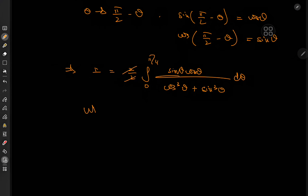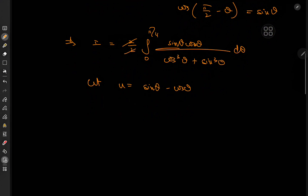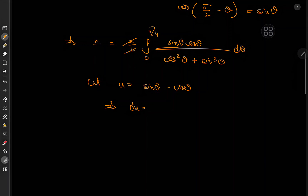We let u = sinθ − cosθ. That may seem quite random and frankly useless, but trigonometric functions are really cool — you can square their sums and differences and get interesting results. This substitution implies that du = (cosθ + sinθ) dθ.